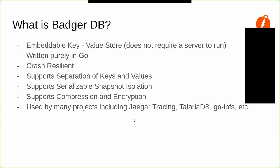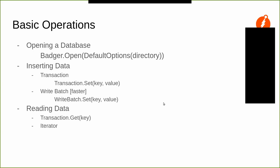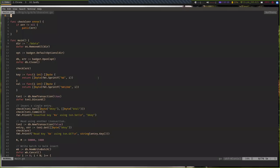Badger is being used by a lot of projects. One of the most famous ones is dgraph; others include Jaeger tracing, Tilauria DB, go-ipfs, and others. We have some basic operations on Badger: open, set, get — you do a transaction for batch writes, set, transaction get, and then iterators to read data. I'm going to quickly show a code example of how you do these operations.